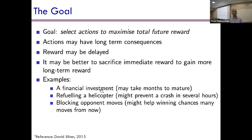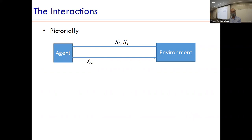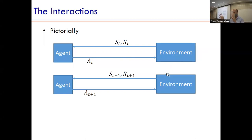For example, a financial investment may take months to mature after you take the action to purchase something. Blocking an opponent's move might create winning chances many moves from now in a board game. Visually, at time t the agent takes action A_t, which was informed by the previous state-reward tuple. It gives that action to the environment — like a robot taking a left turn — and the environment responds with a new state S_{t+1} and reward R_{t+1}.